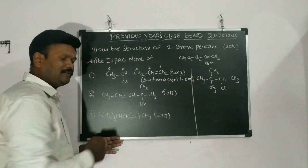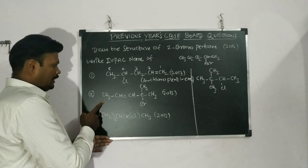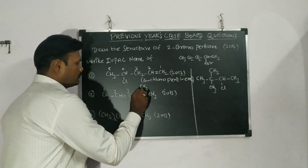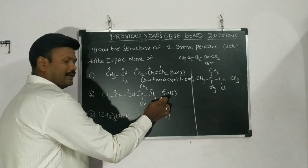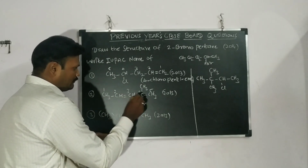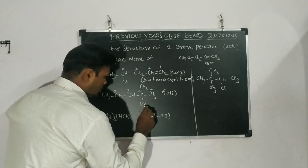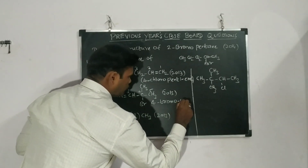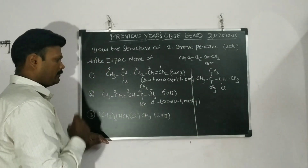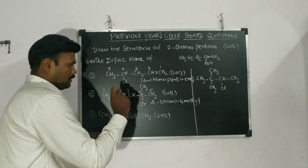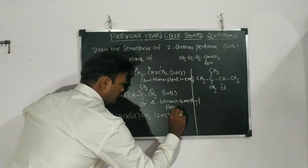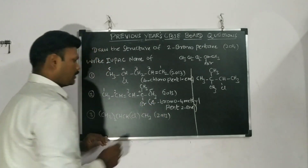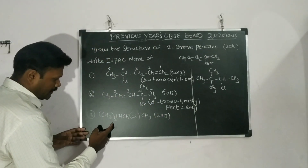The third one: CH3–CH=... the double bond comes here. We number it: one, two, three, four, five. This was also asked in the year 2013. Total carbon atoms: five. In the fourth position we have bromo, so 4-bromo. A methyl group is also present, so 4-methyl. The long chain is five carbons — 'pent.' The double bond is at the second position, so 'pent-2-ene.' The name of this compound is 4-bromo-4-methylpent-2-ene.